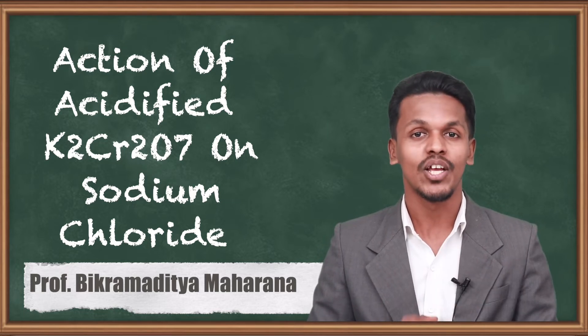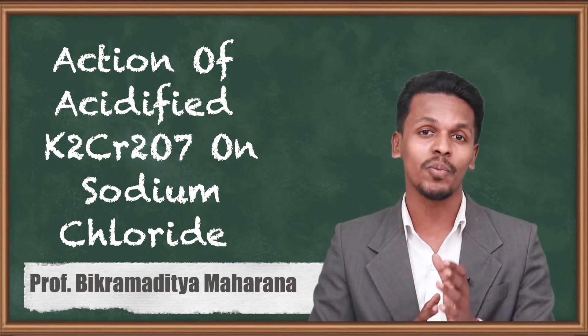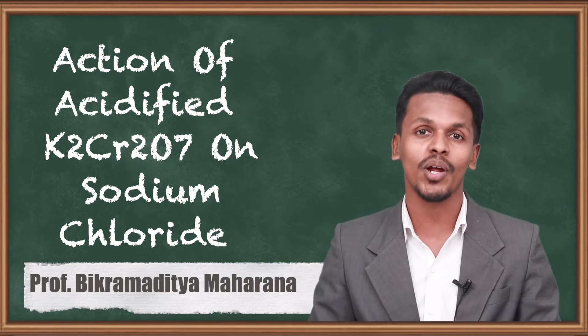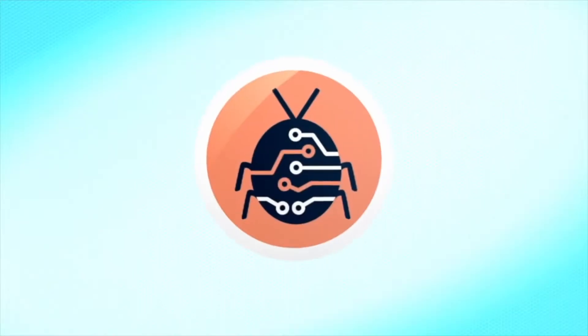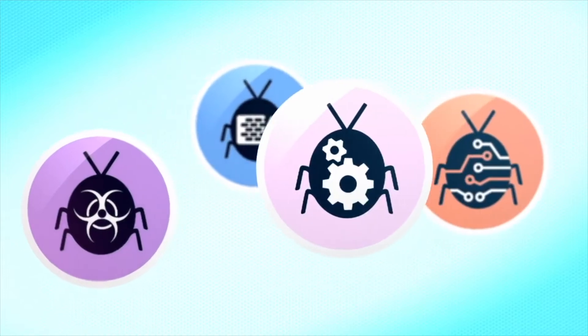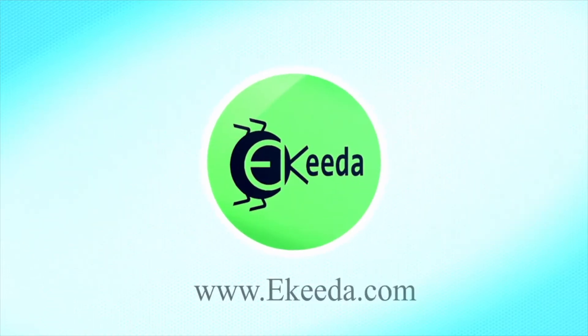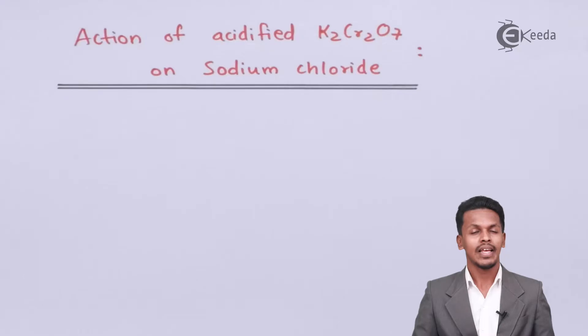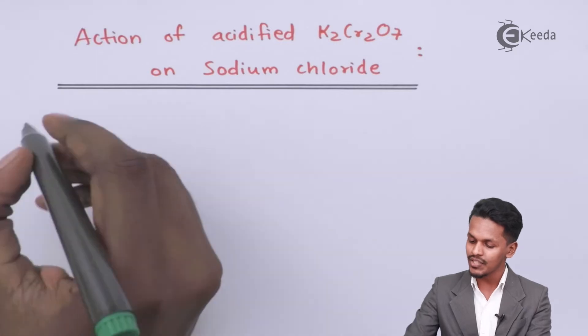So what is the reaction and what is the color change that we could observe in this reaction? This is what I want to talk about in this topic. The action of acidified K2Cr2O7 on NaCl, that is sodium chloride, is as follows.